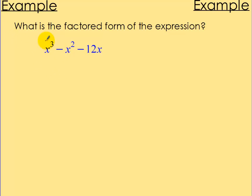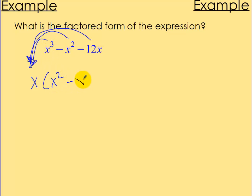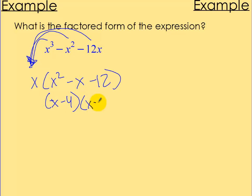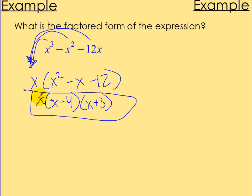What is the factored form? I'm going to factor out the greatest common factor, which is x. What I'm left with is x squared minus x minus 12. Factoring the trinomial — what multiplies to negative 12 and adds to negative 1 — that's going to be x minus 4 and x plus 3. So the factored form is x times (x minus 4) times (x plus 3).